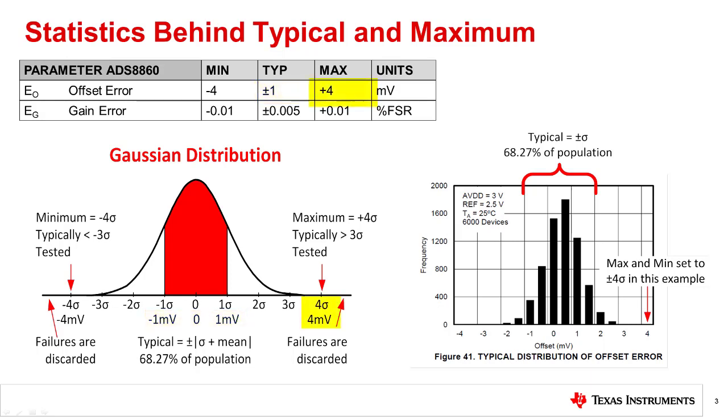The maximum offset is a tested parameter, so any device that exceeds the maximum limit is discarded and will not be shipped to customers. Thus, the distribution is actually a truncated Gaussian distribution as there is no population above the maximum or below the minimum. The maximum limit is set on the tail of the distribution to minimize yield loss during manufacturing. Typically, the maximum is set above three standard deviations. In this example, you can see that the maximum was set to four standard deviations. Note that 68.27% of the population is inside the typical limits.